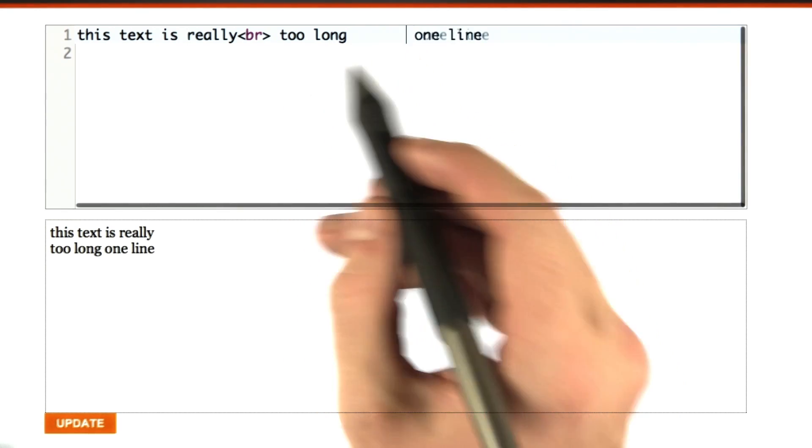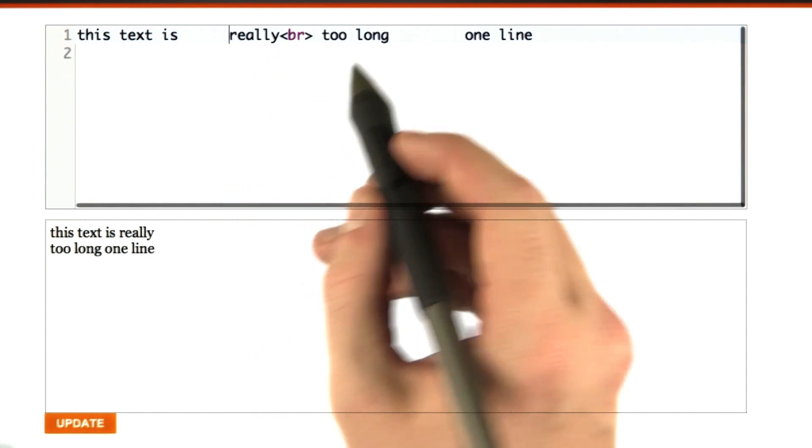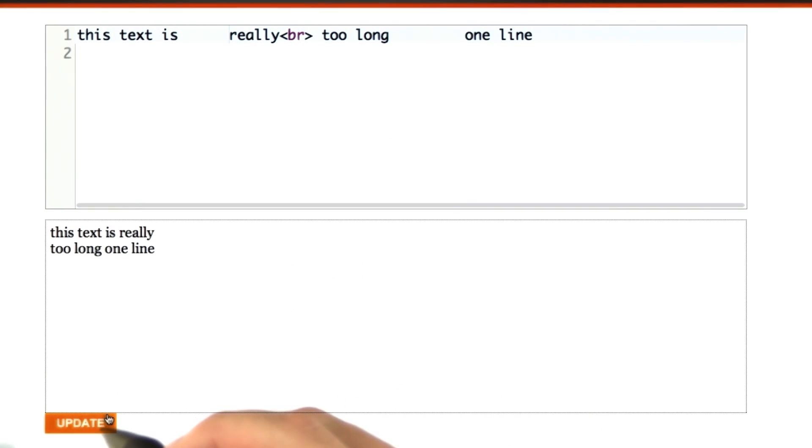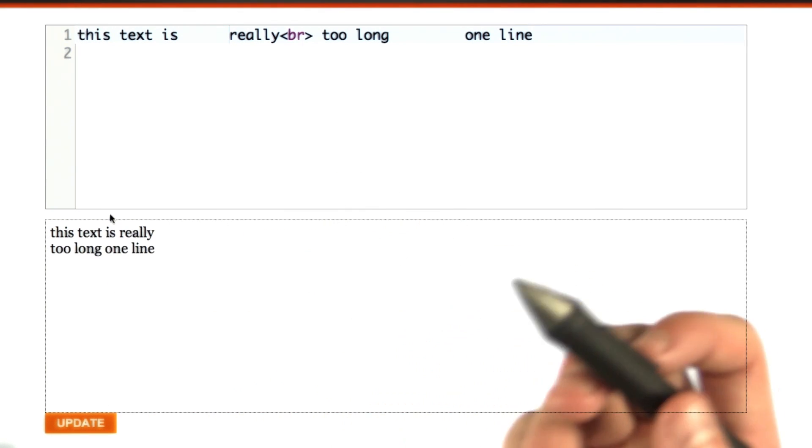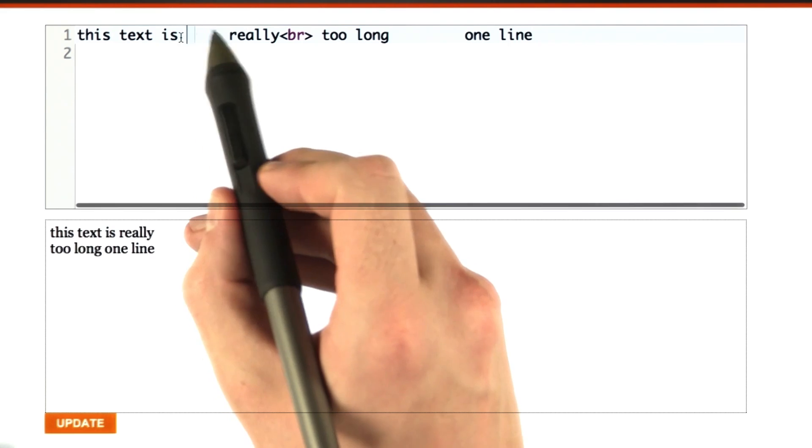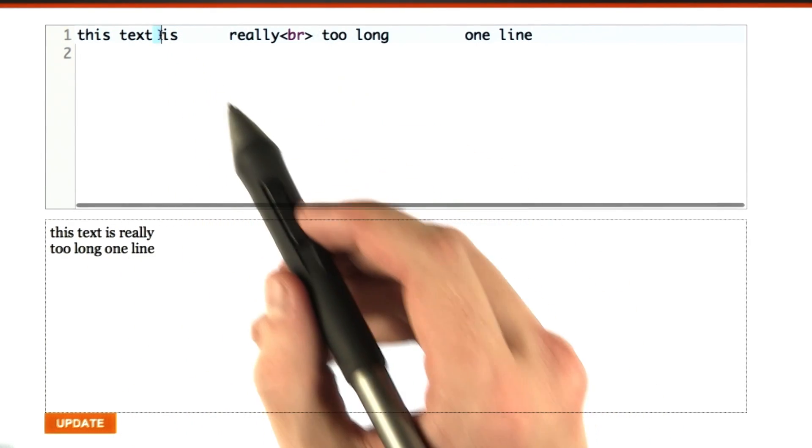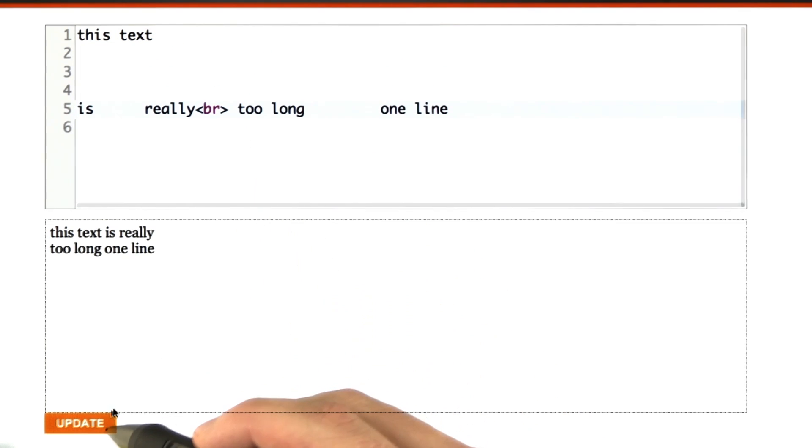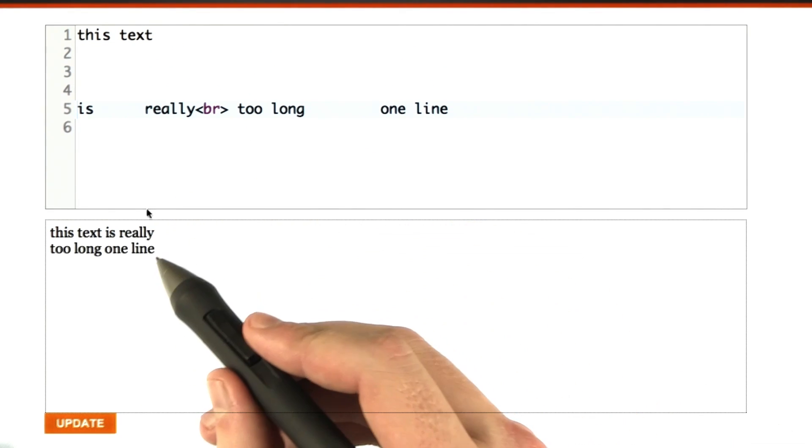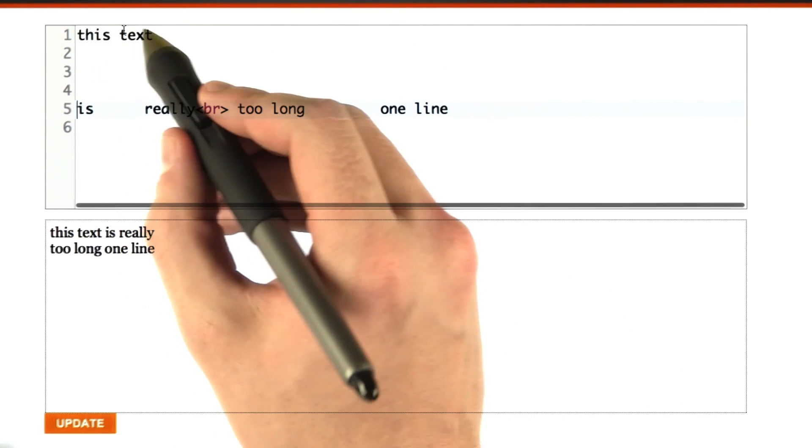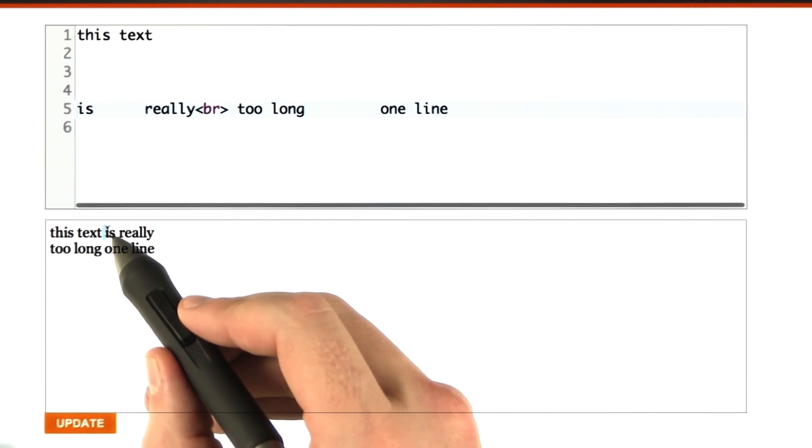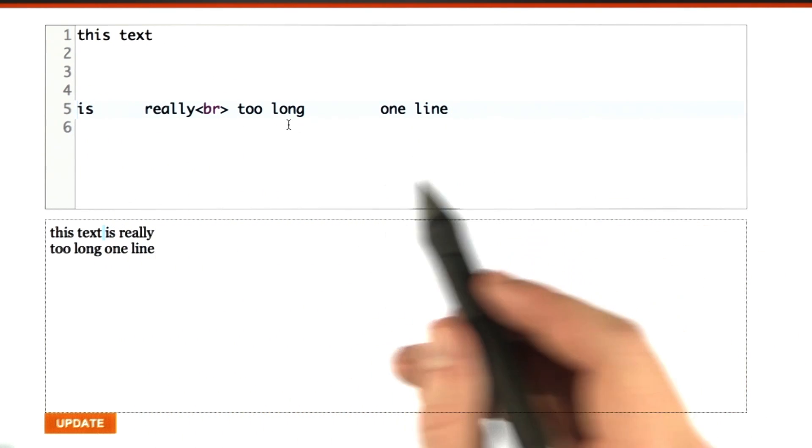So we can format this however we want, put all of these spaces in here, and when we update this, it will always come out the same. There's an example. All this white space turns into one single space. All of these new lines here turn into one single space. This text space is really, you get the idea.